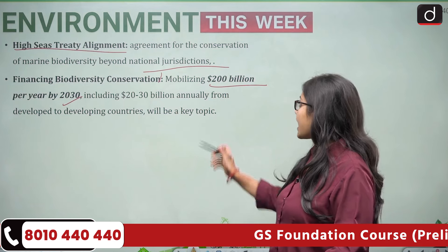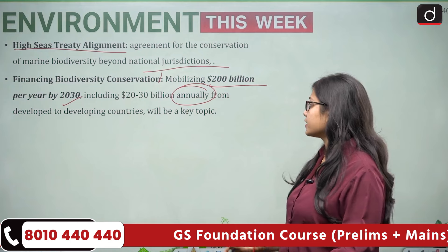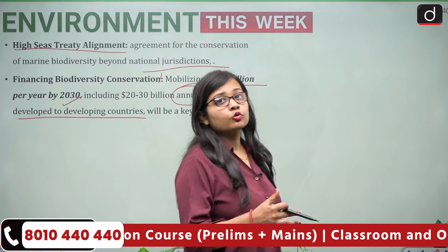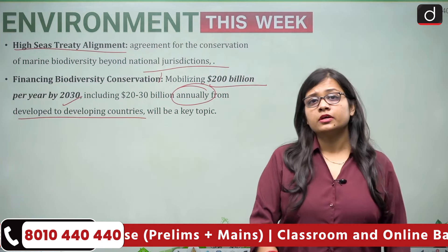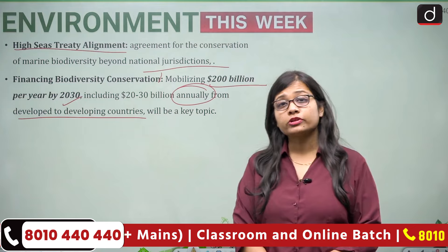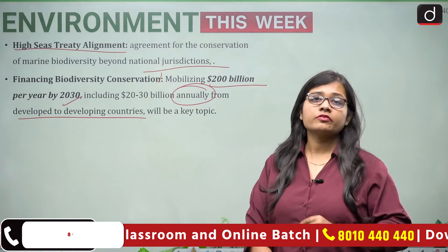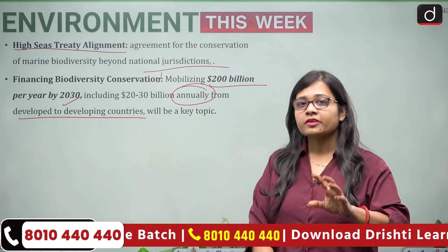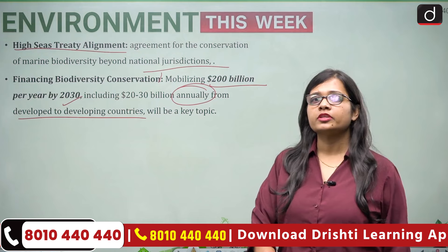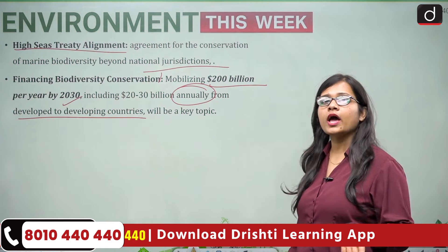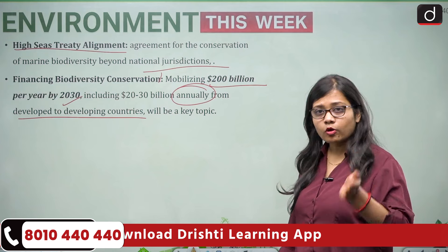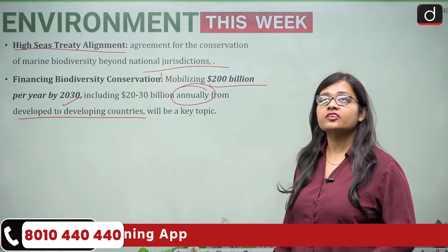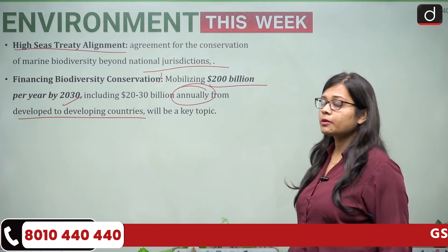Financing biodiversity conservation is a key agenda: mobilizing 200 billion US dollars per year by 2030, including 30 billion US dollars annually from developed to developing countries. Developed countries bear responsibility to contribute more, as they have contributed most to the current grim environmental situation, and both developed and developing nations must work to maintain biodiversity.